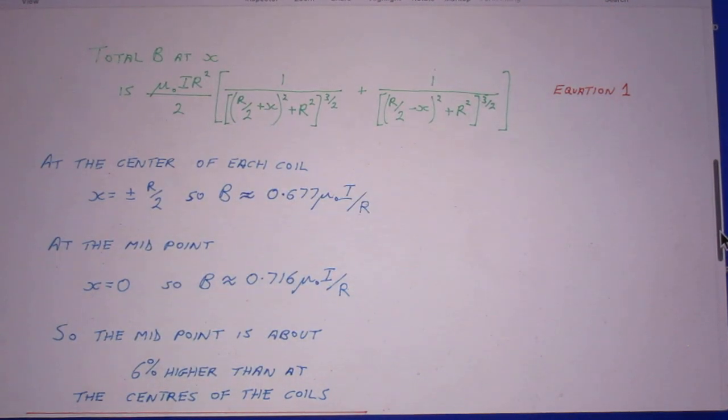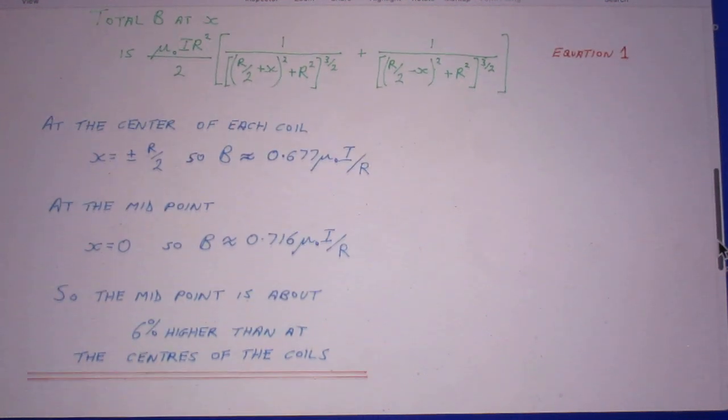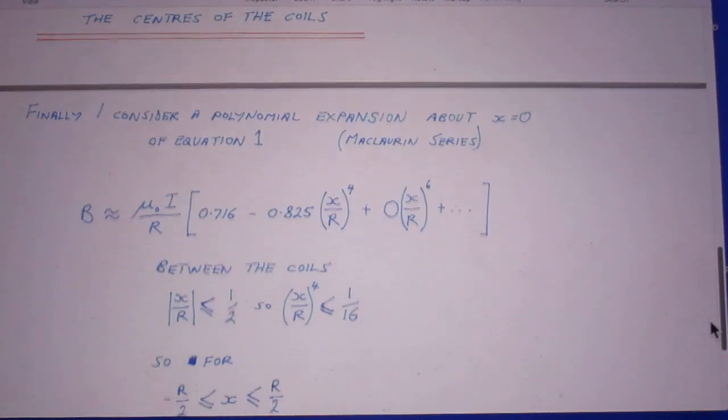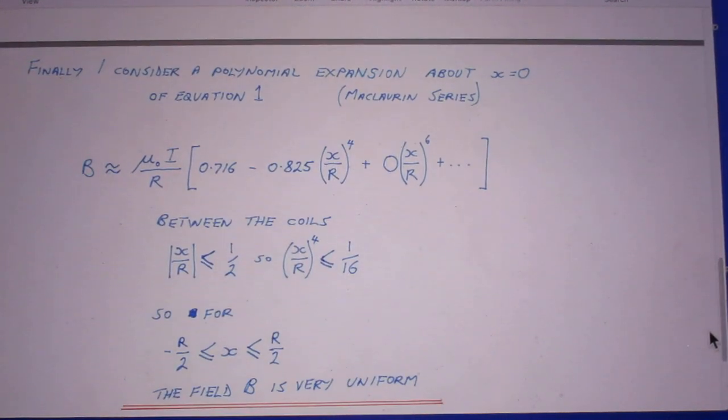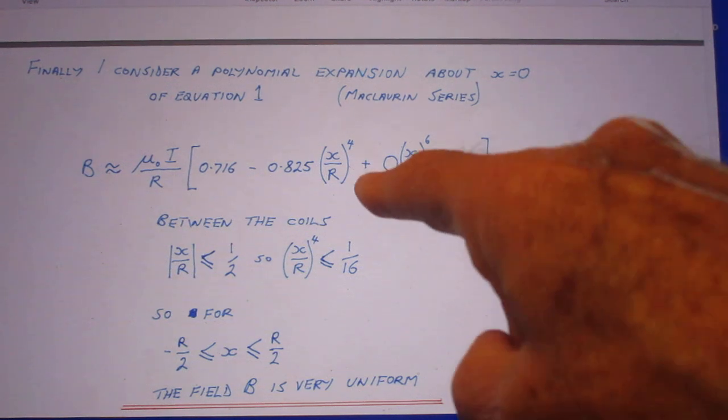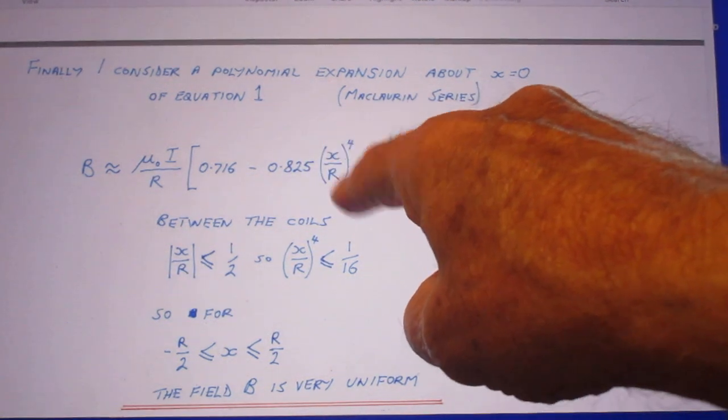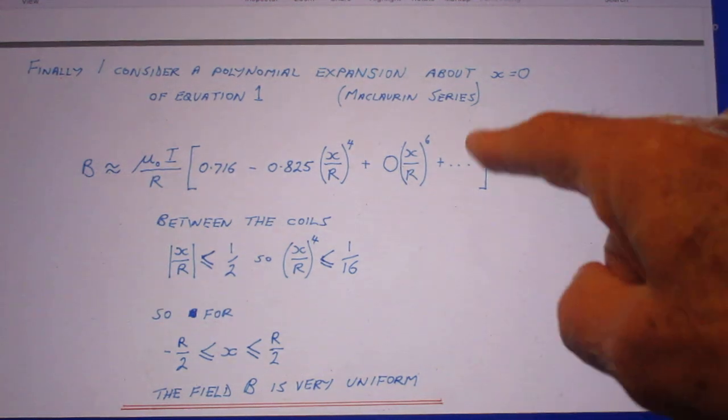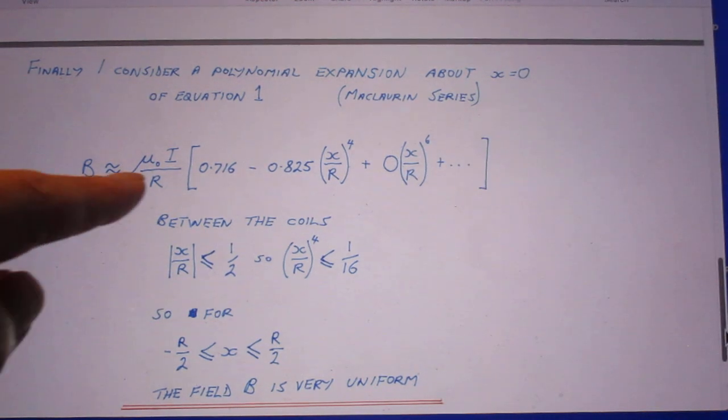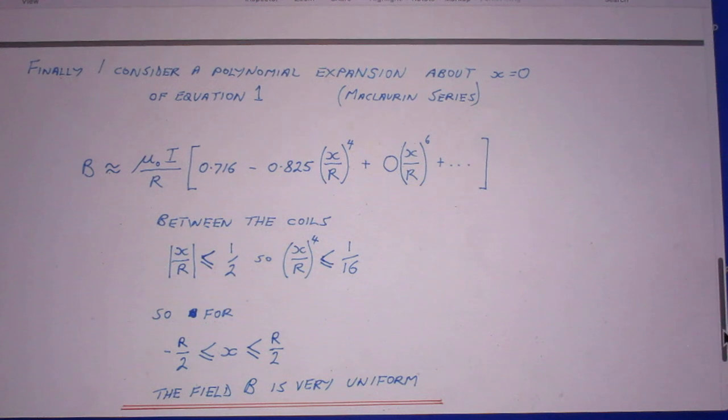Not only for r/2 plus or minus, not only for x is zero, but for any value of x. And that gives you then this polynomial expansion. So this is the second term, x/r to the power 4, and here to the power 6. The first term is 0.716.